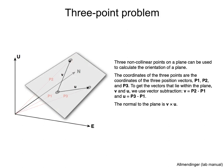Now that we know the cross product, we can solve the three-point problem using this operation. The coordinates of the three points are defined by three position vectors, p1, p2, and p3. To get the vectors that lie within the plane, v and u, we use vector subtraction. v is equal to p2 minus p1, and u is equal to p3 minus p1. And to find the normal to the plane, we just need to do v cross product u.